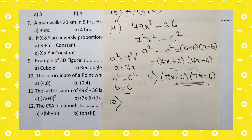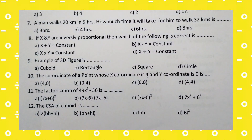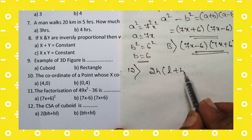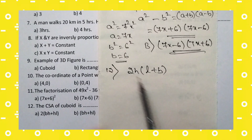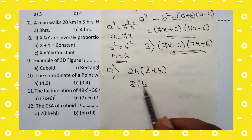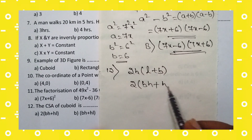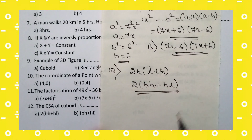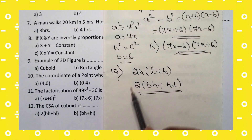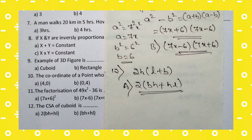12th question: the curved surface area (CSA) of a cuboid. The CSA of a cuboid is 2 into (BH + HL). So for the 12th question, option A — 2(BH + HL) — is the right answer.